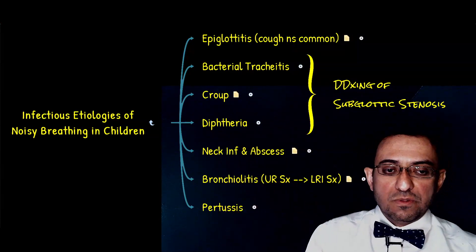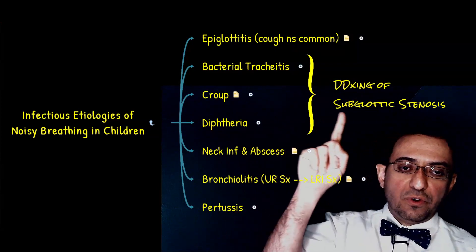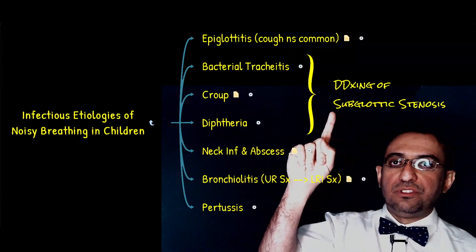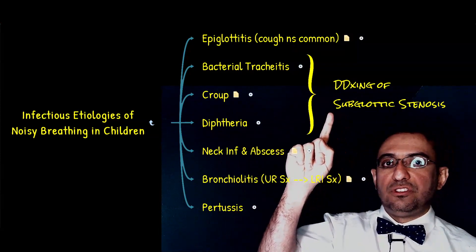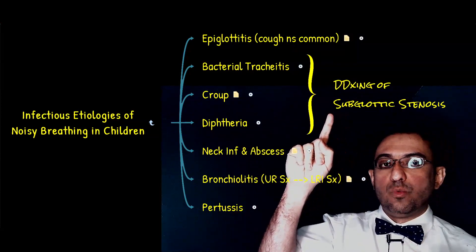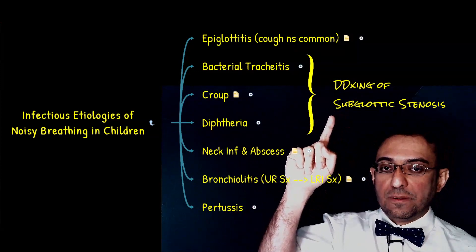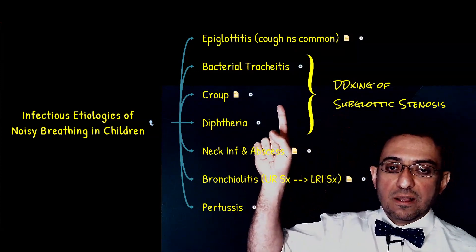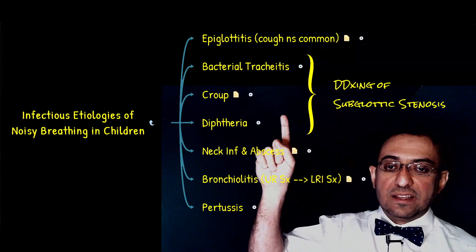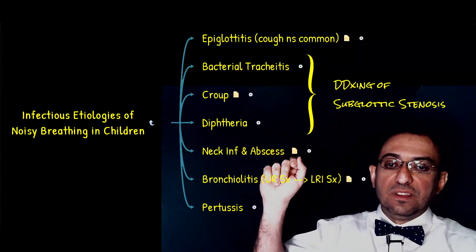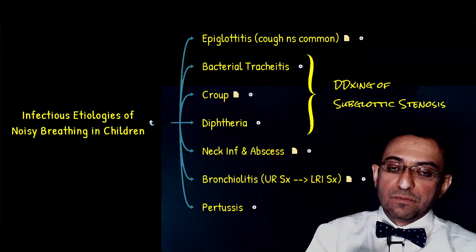This episode focuses on the differential diagnosis of conditions associated with subglottic stenosis. These three conditions are bacterial tracheitis, croup, and diphtheria.